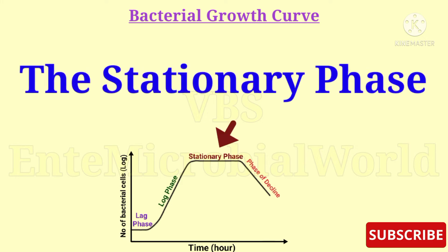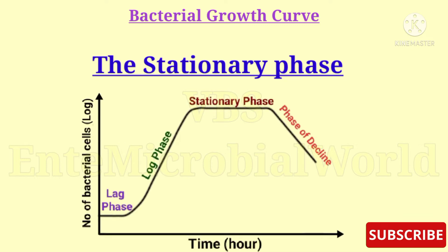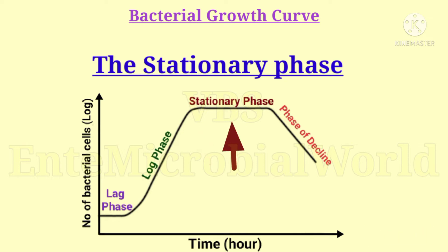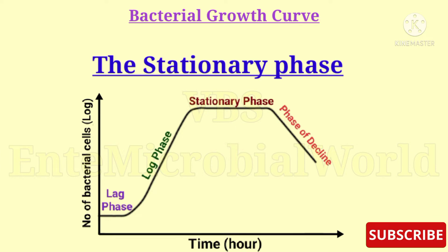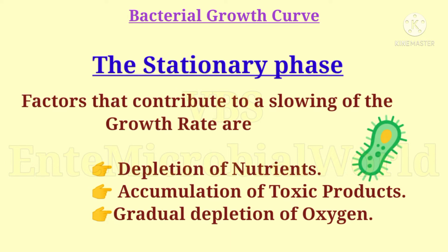Next we are going to see about the stationary phase. After several hours, certain factors contribute to a slowing of the growth rate. The log phase of growth begins to taper off in a gradual fashion, represented by a transition from a straight line through a curve to another straight line — this phase is called the stationary phase. In the stationary phase, the rate of bacterial cell growth is equal to the rate of bacterial cell death. Factors that contribute to the slowing of the growth rate are depletion of nutrients, accumulation of toxic products, gradual depletion of oxygen, etc.